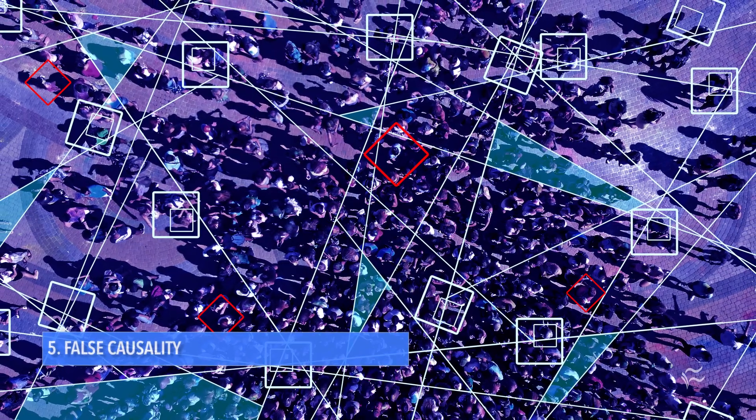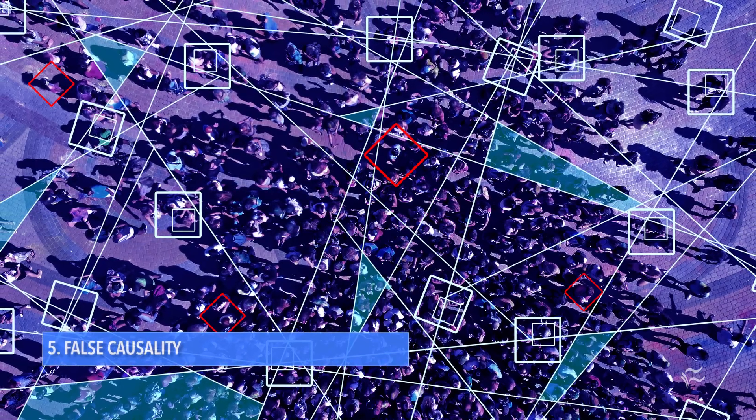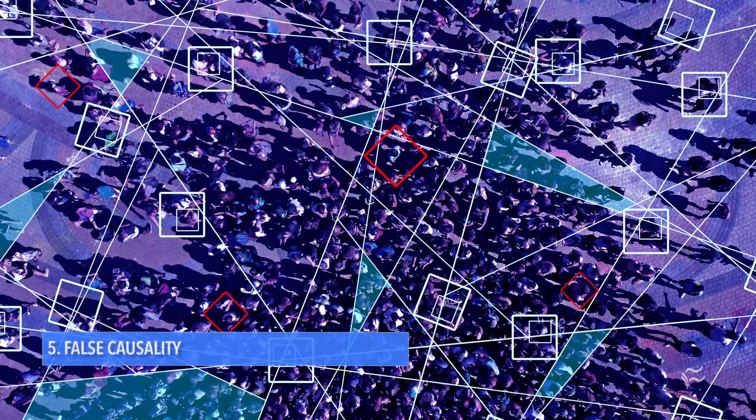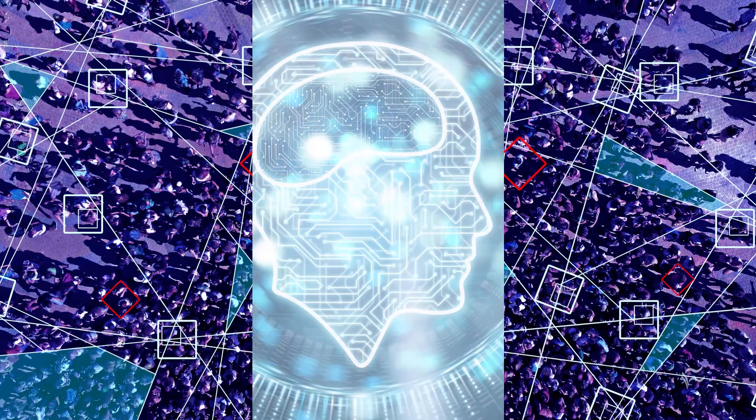At number five: false causality. A great example is that a large cluster of firemen correlate with higher property damage. Obviously these firefighters aren't causing the property damage — more damaging fires need more firefighters. A similar one to avoid is the clustering illusion, because sometimes random things cluster.